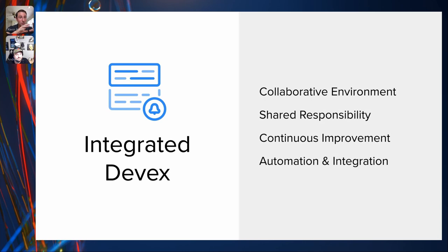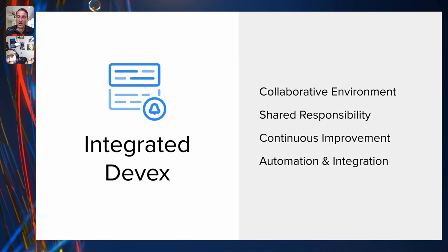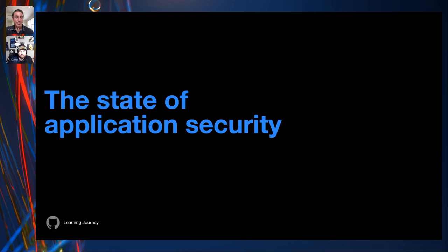I want everyone to be on the same page about the developer being at the center of what your program should be. As AppSec engineers, we've moved away from focusing in a silo on security — you're also an engineer yourself. Similar to how QA engineers in the past used to manually check for regressions and now write automation to do that, this is a similar evolution. The tooling should support happy developers — and happy developers are productive developers. With that, I'll hand over to Moose to talk about the state of application security.